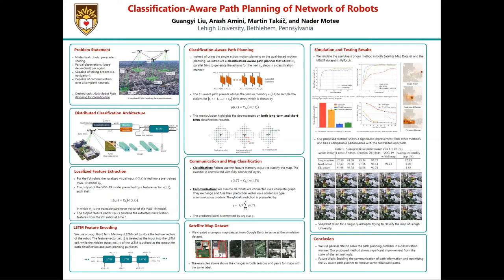In this paper, we're trying to solve the problem of multi-robot map classification. We assume that there are identical robots in the environment, and each of the robots can take partial observations from the environment. In order to collect more samples from different locations, robots are capable of taking actions. Meanwhile, robots are also capable of communicating with each other over a complete network to exchange their beliefs from the environment. The problem we're trying to solve is to design a path planner for the robots to plan their motions such that it can benefit the classification as much as possible.